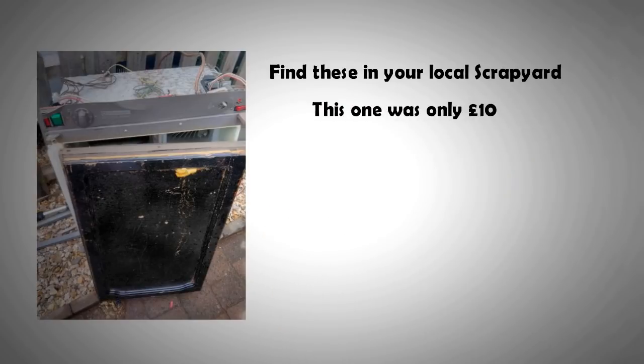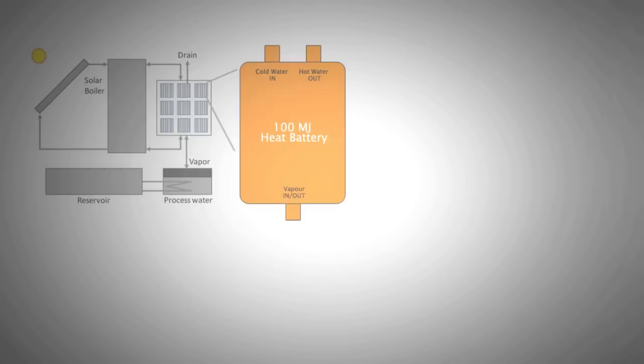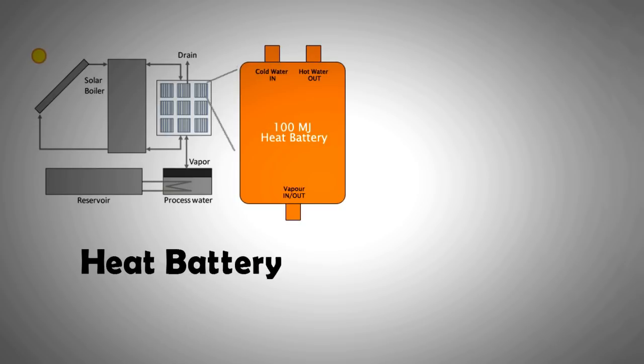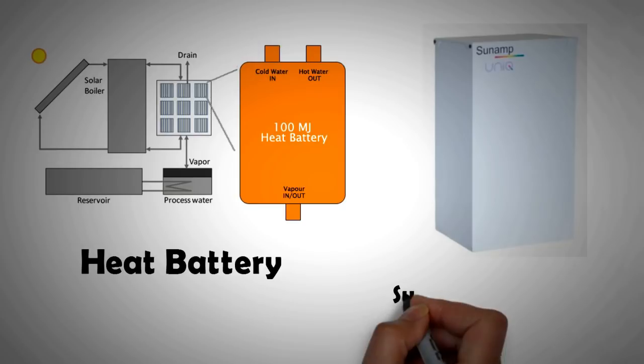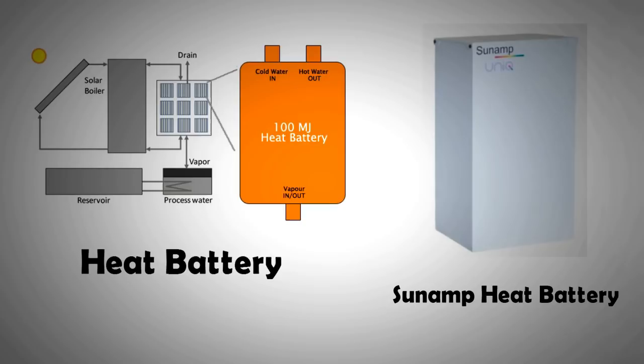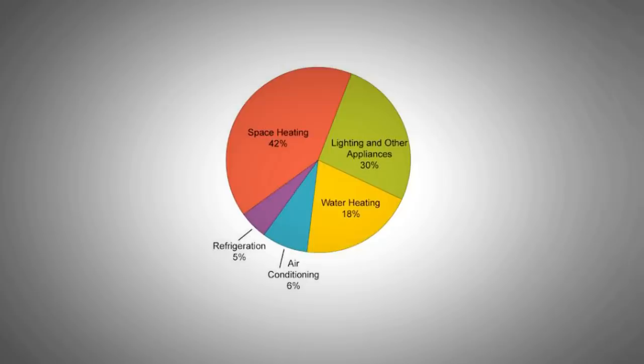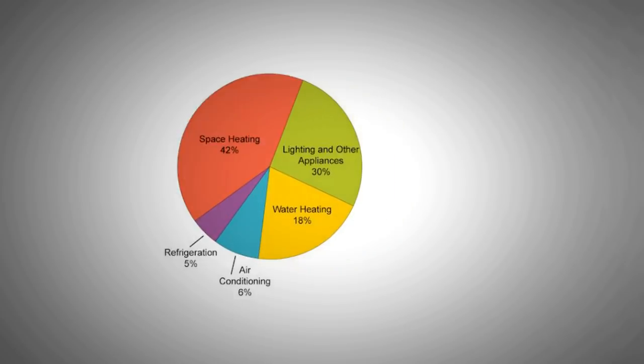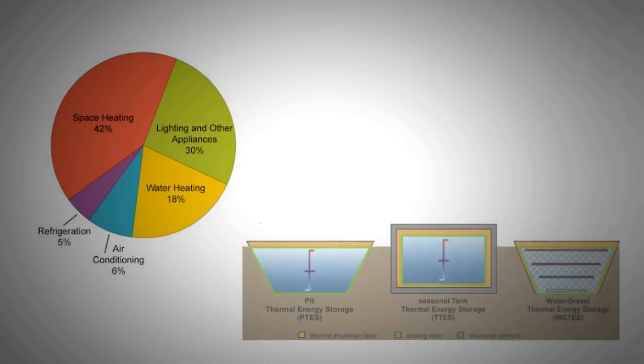One more exciting development in the world of solar thermal technology is the heat battery. A Scottish company called Sunamp has developed these batteries which can store large quantities of heat. This heat can then be released using a trigger system. Heat batteries can be coupled with PV electricity or solar water heaters to store spare energy. Bear in mind that most of our energy usage is in the form of heat. We have made rapid strides in electricity storage, but not the same can be said for heat storage.